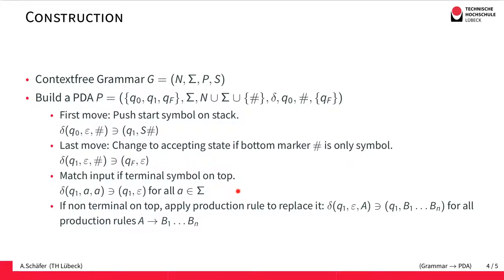For state Q1, we have two types of transitions. The first one is the easiest one. This simply matches the input against the stack top for all the terminal symbols. So for all symbols from the input alphabet, we simply match the symbol on the stack with the input.